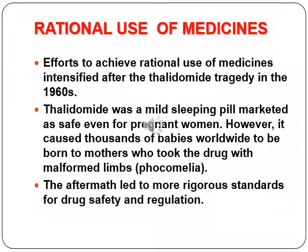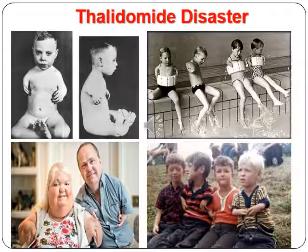Efforts to achieve rational use of medicine intensified after the thalidomide tragedy in 1960, where thalidomide was used as a morning sickness pill for pregnant women. However, it caused thousands of babies born to mothers who took the drug to have malformed limbs. This resulted in the discontinuation of the drug. The hazard caused by thalidomide is known as phocomelia — babies born without limbs.